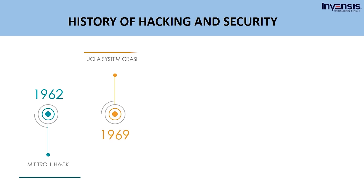In 1969, a UCLA student tried to transmit the word 'login' to another computer at the Stanford Research Institute over the ARPANET, a precursor to today's internet. After the alphabets 'l' and 'o' were sent, the system immediately crashed. So the first message ever sent on the internet was 'lo.' However, after one hour, the full word 'login' was successfully sent after recovering from the crash.